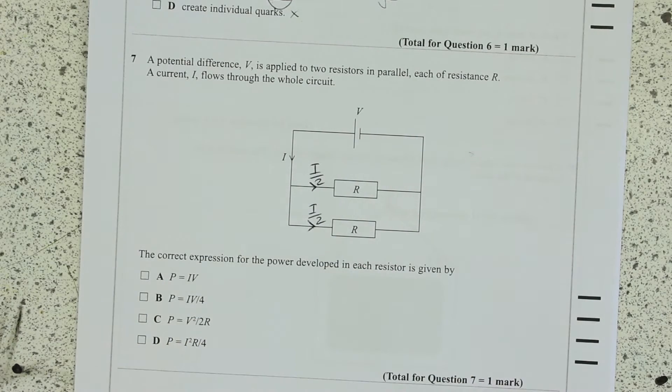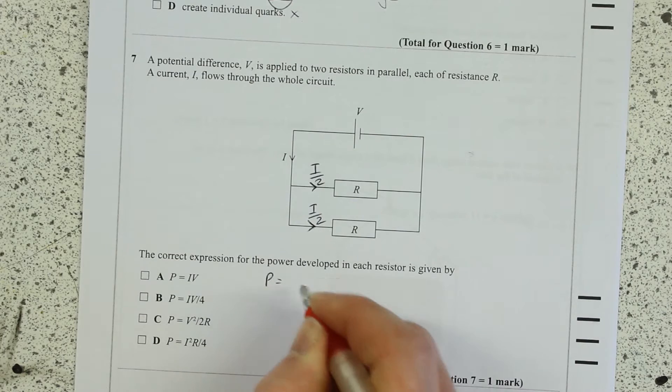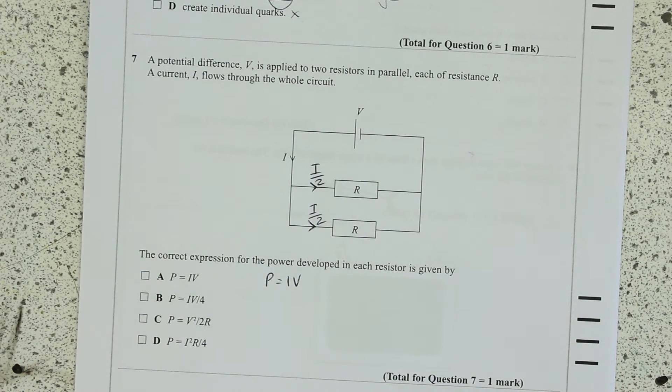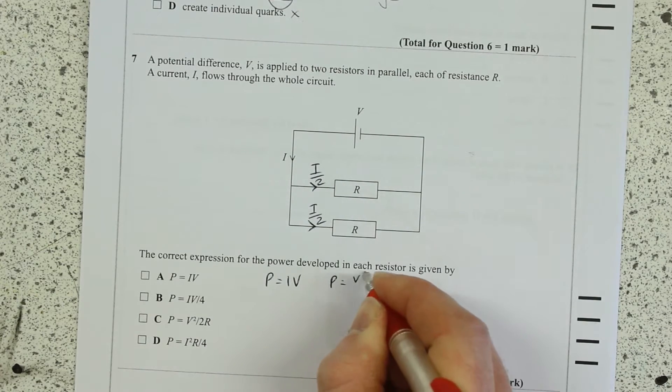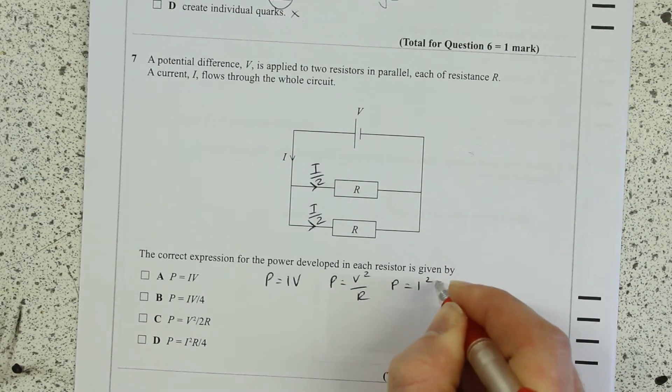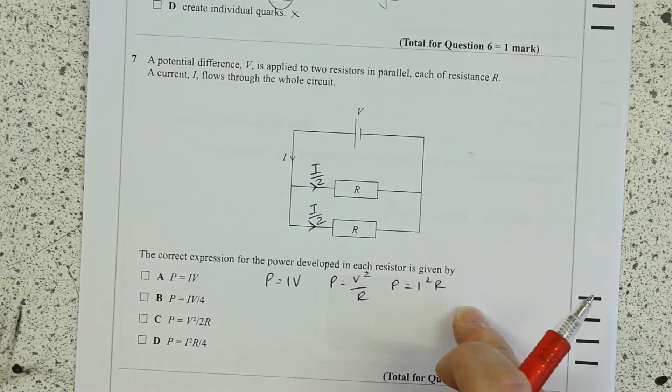So we know our formulas like the back of our hand and we know the equation for electrical power is P is IV, and if you sub in Ohm's law you can get P is V squared over R and you can get P is I squared R. So essentially that is the basis of these questions.